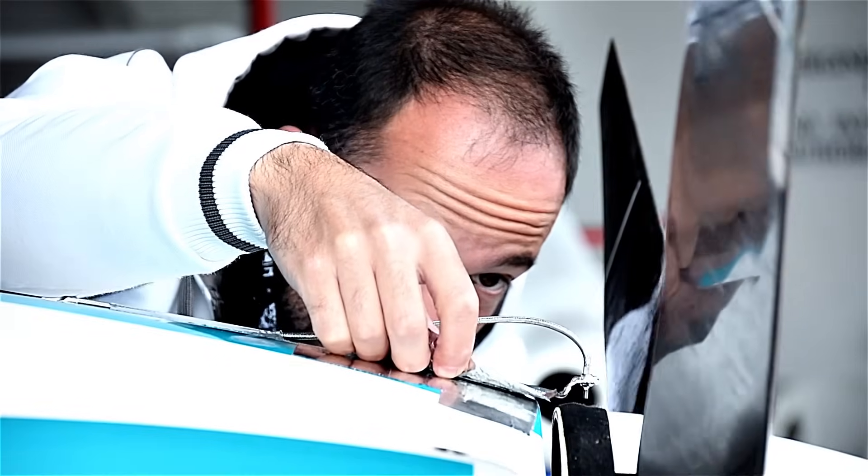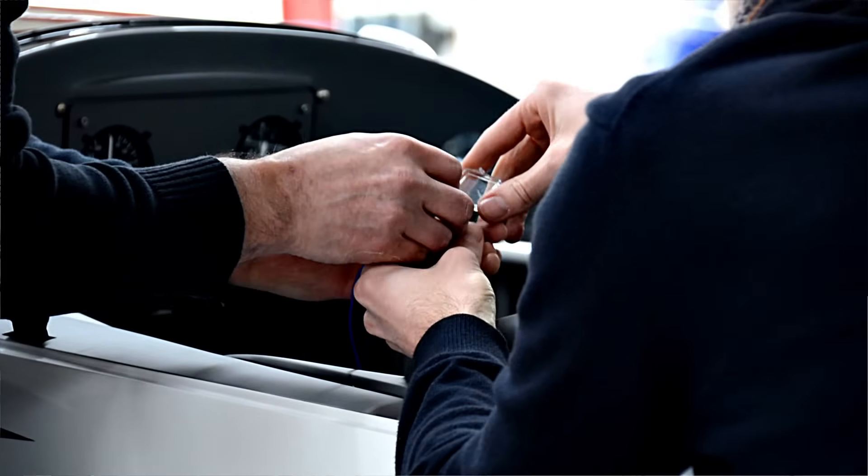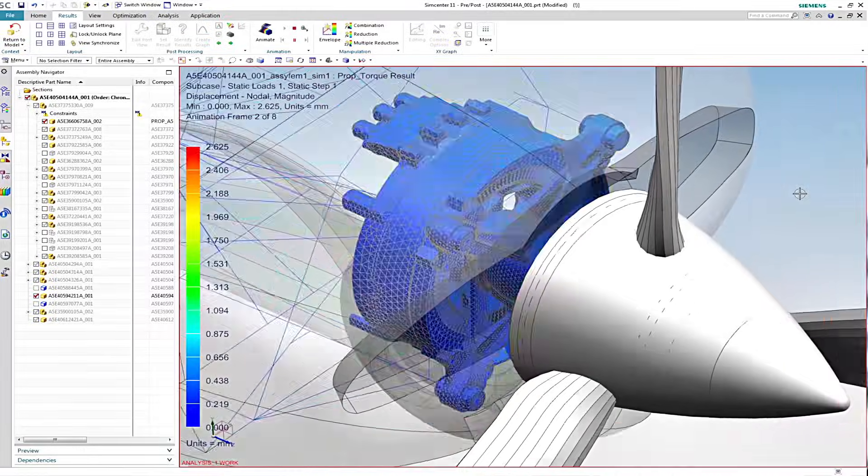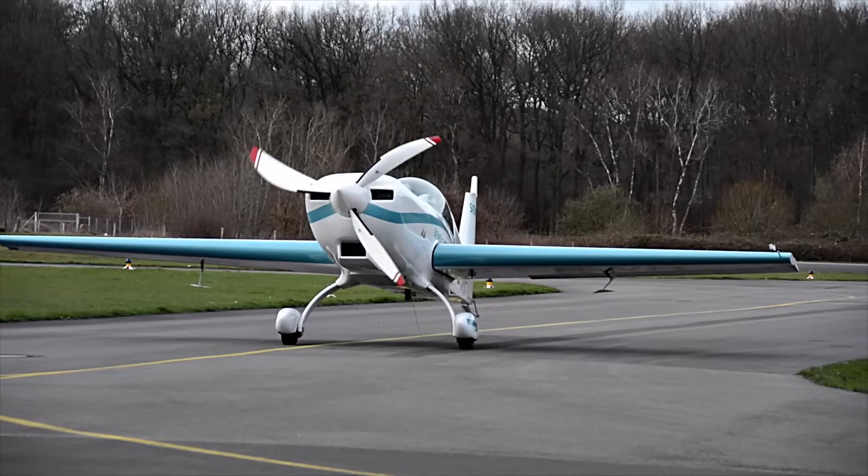Siemens utilized the digital twin to develop a world record setting electric aircraft motor that not only weighs 50 kilograms, but is also five times more powerful than comparable electric motors.